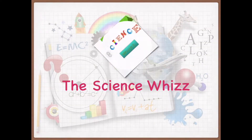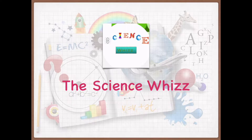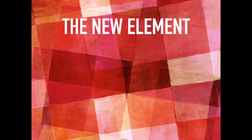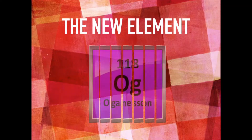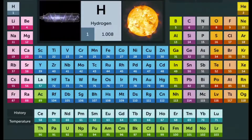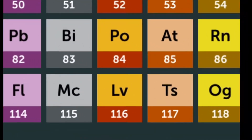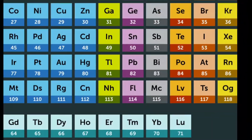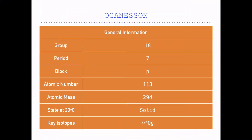Hi guys, welcome back to another video of the ScienceWiz. Today we're going to look at the new element Organescent, which is found in the bottom right corner of the periodic table. First, let's look at some general information about Organescent.